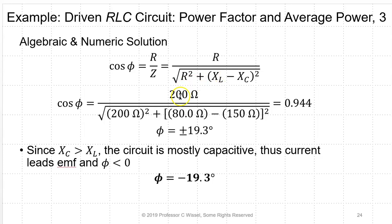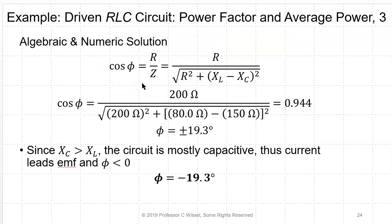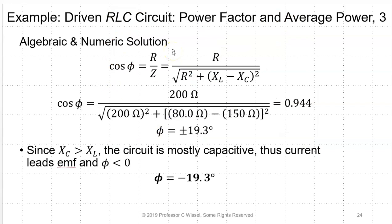After plugging in numbers, the power factor cosine phi equals 0.944, which is fairly close to resonance. Taking the inverse cosine gives phi = 19.3°. Since XC = 150 Ω is greater than XL = 80 Ω, we are on the capacitive side of the resonance curve, so the angle is negative — phi = −19.3°. This means the circuit is capacitive and the current leads the voltage.